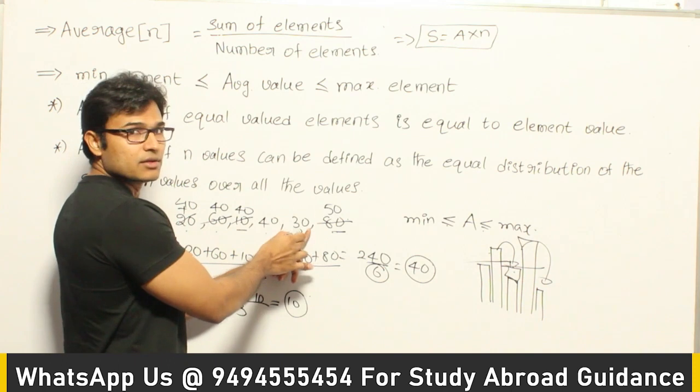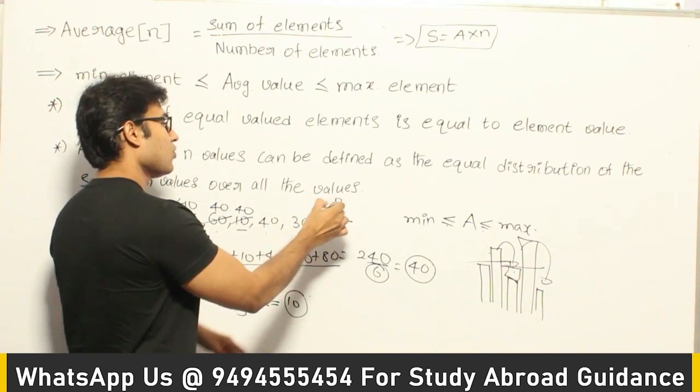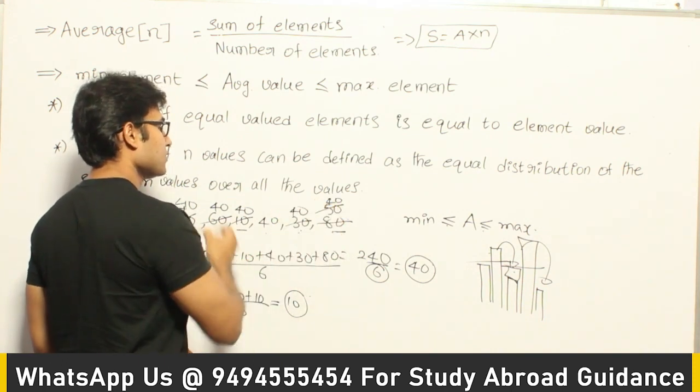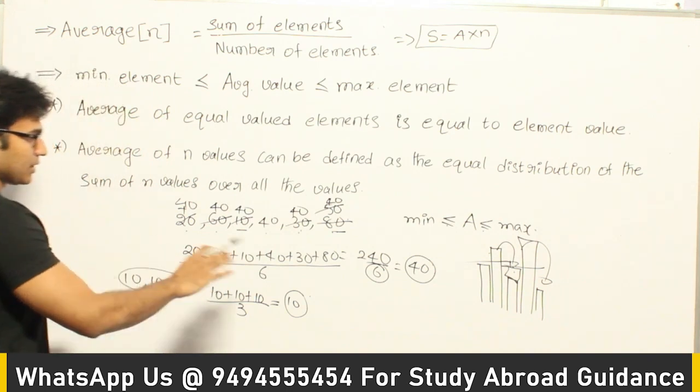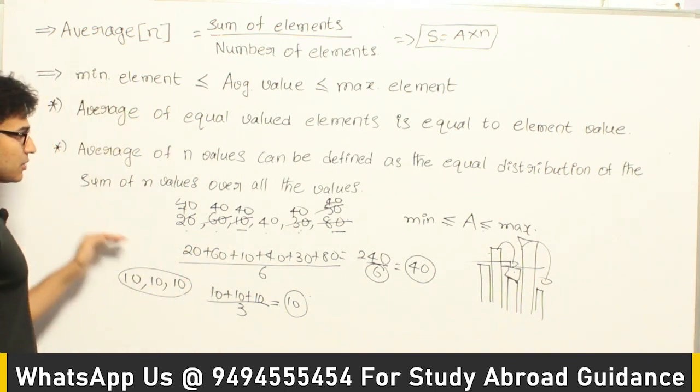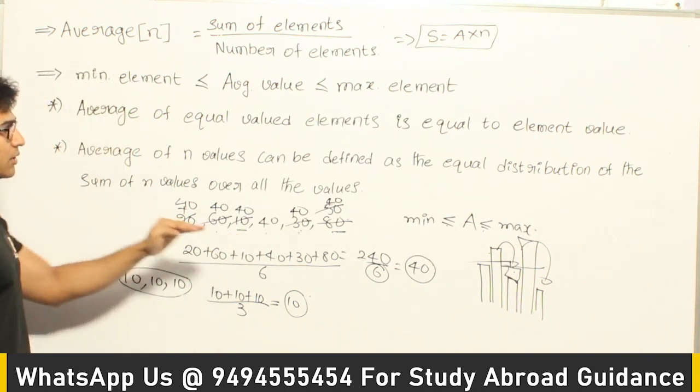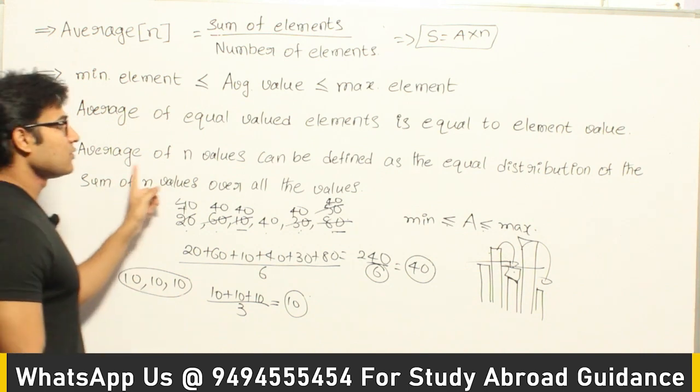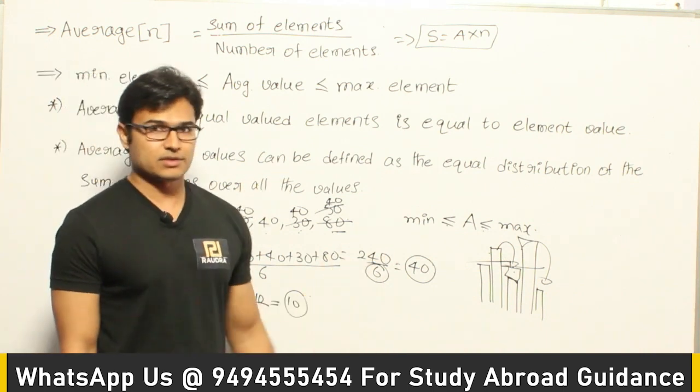Now here it is only 30, so I can pull out 10 from it making it 40, and I can give it to this making it 40. So it is nothing but distributing the sum in such a way that everyone is going to get equal distribution. That is what average is.